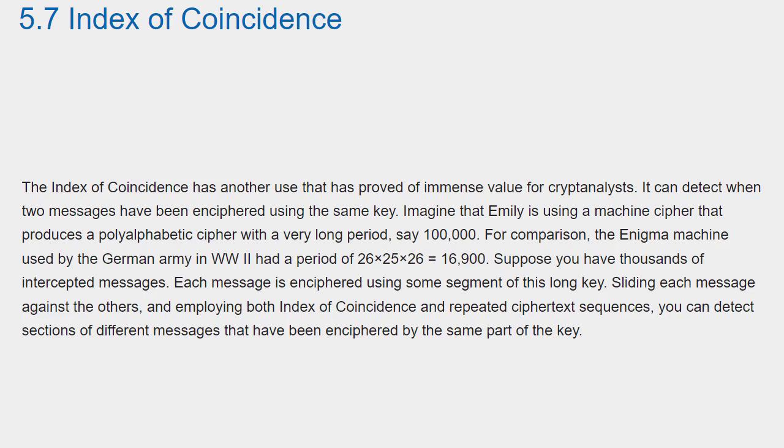The index of coincidence has another use that has proved of immense value for cryptanalysts. It can detect when two messages have been enciphered using the same key. Imagine that Emily is using a machine cipher that produces a polyalphabetic cipher with a very long period, say 100,000. For comparison, the Enigma machine used by the German army in World War II had a period of 26 x 25 x 26 equals 16,900. Suppose you have thousands of intercepted messages. Each message is enciphered using some segment of this long key. Sliding each message against the others and employing both index of coincidence and repeated ciphertext sequences, you can detect sections of different messages that have been enciphered by the same part of the key.